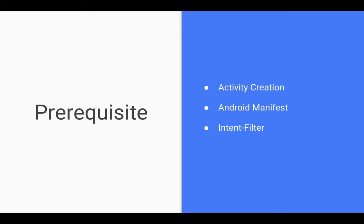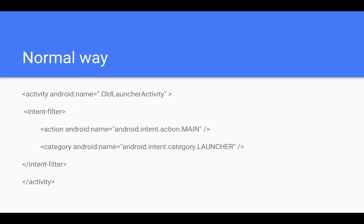Just to avoid this kind of scenario, activity alias comes in. First, the prerequisites for this: you should know how to create an activity, you should know what a manifest is in Android, and you should be familiar with intent filters.